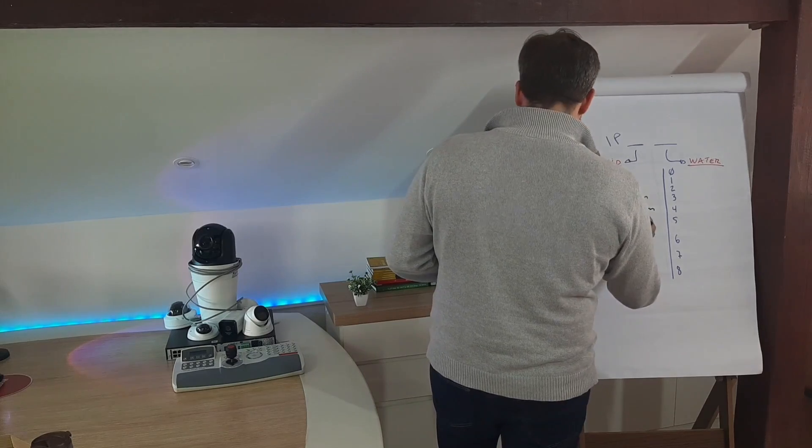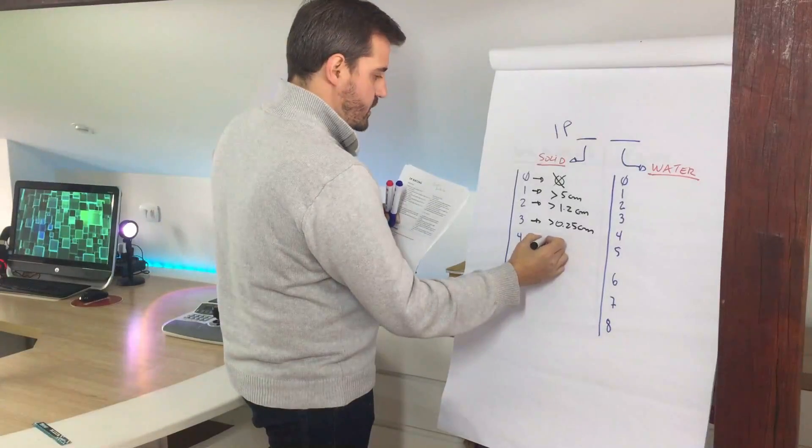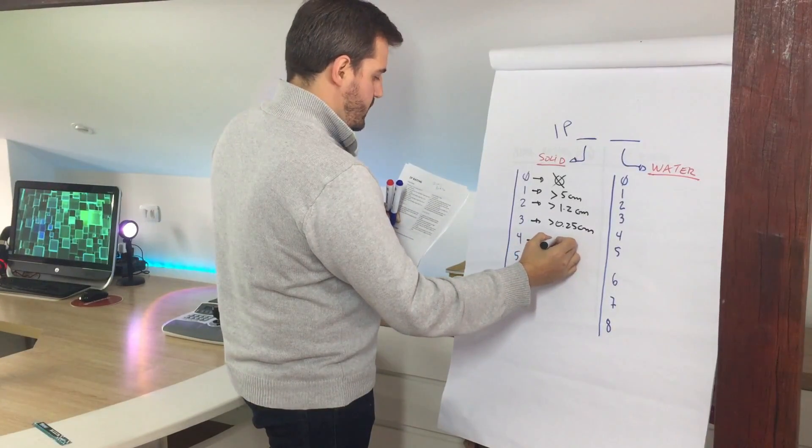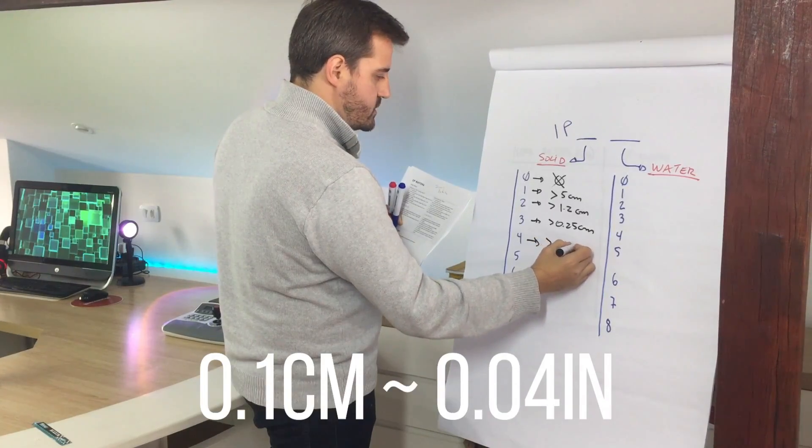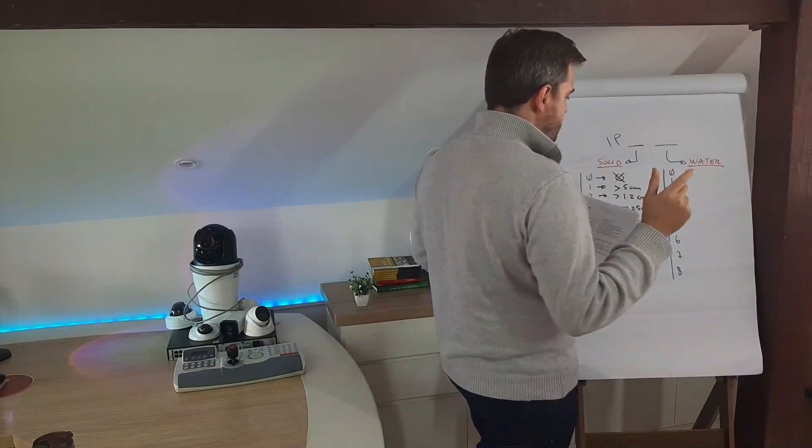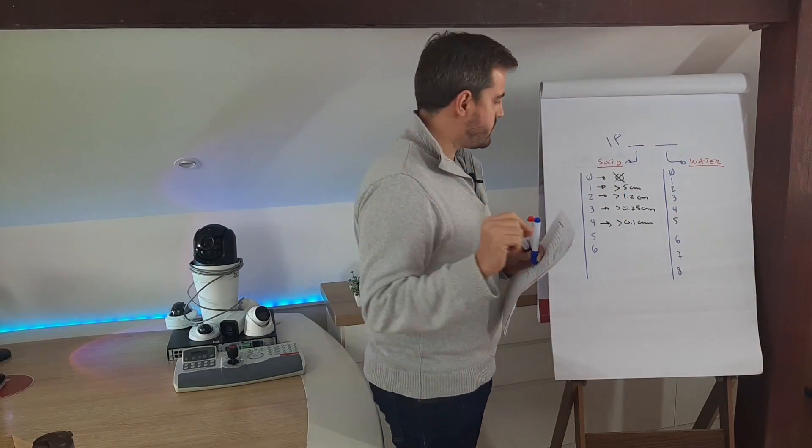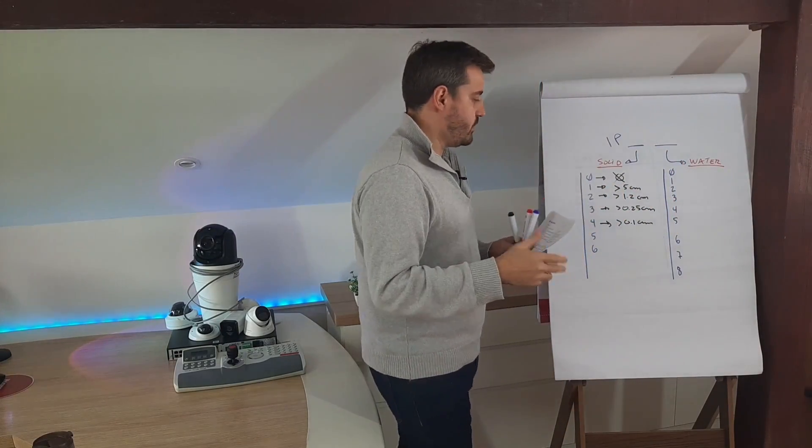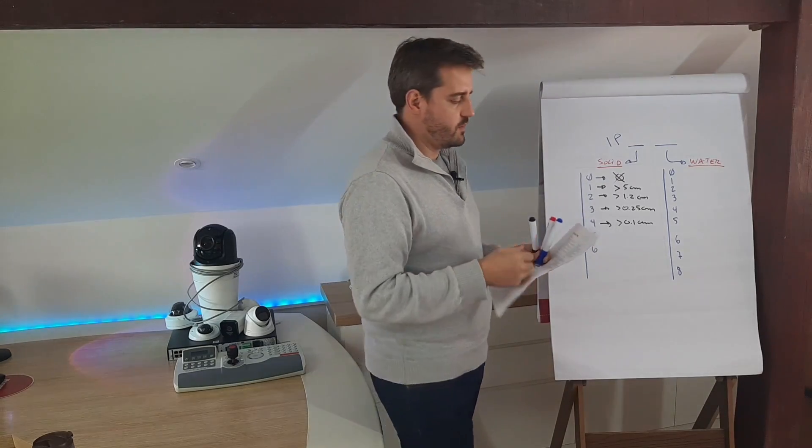Fourth one are objects bigger than 0.1 centimeters, so this can be like a thin wire or something, so it's very thin but still comparing to dust still big.